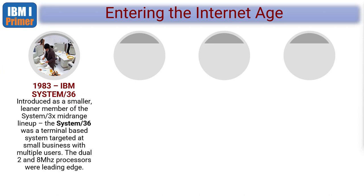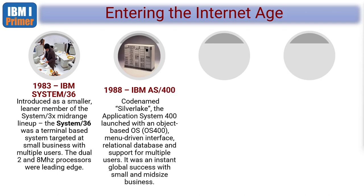So IBM had these two machines — the System 36 and the System 38 — both serving different ends of the small-to-medium marketplace. IBM carried on their development, and the AS400 was introduced in 1988.